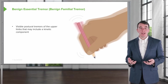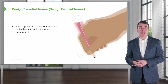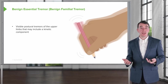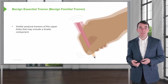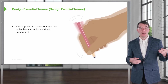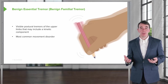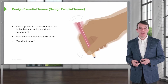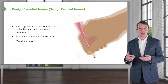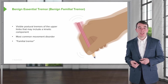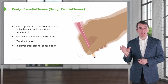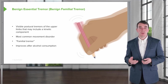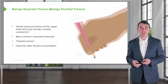A common condition featuring kinetic and action tremor is benign essential tremor, also called benign familial tremor. This presents as a visible postural tremor in the upper limbs that may include a kinetic component. It is one of the most common movement disorders and tends to run in families — grandparents, parents, and children may all be affected. Uniquely, this tremor improves with alcohol, which is a supportive historical detail for the diagnosis.